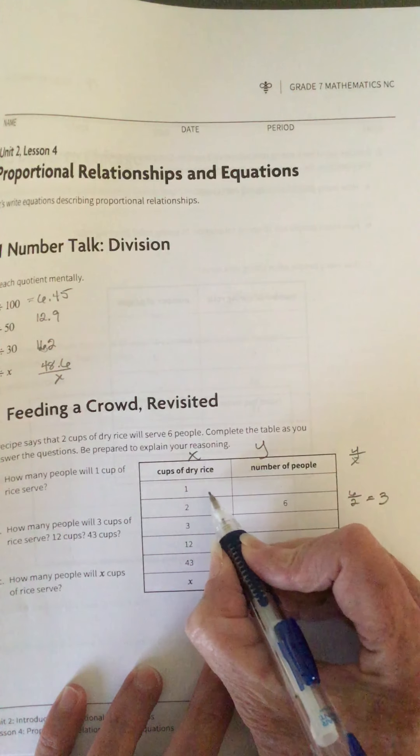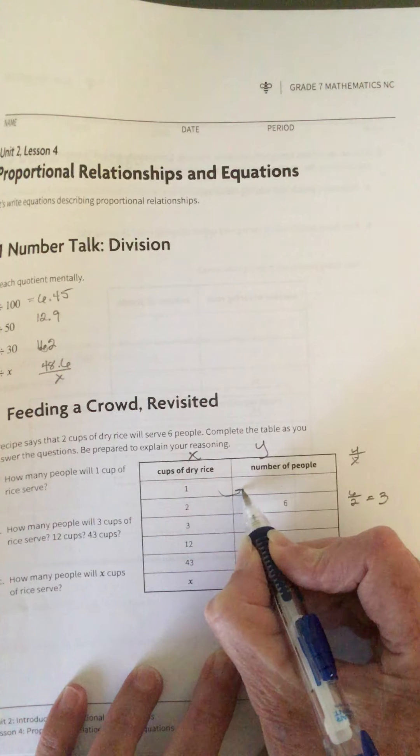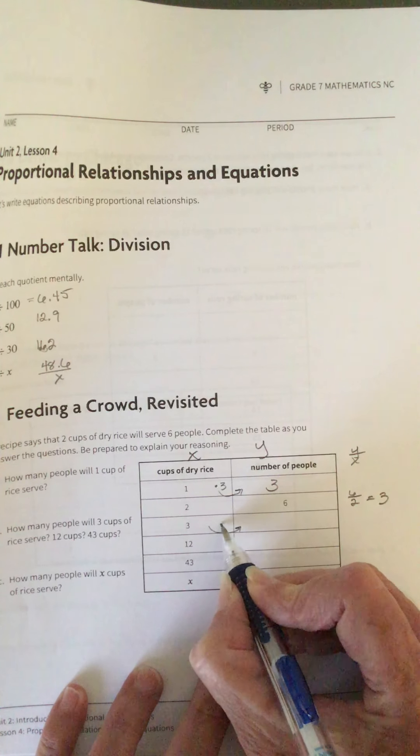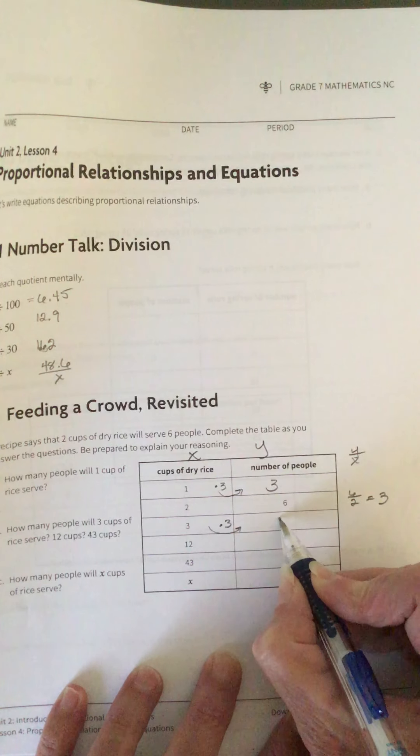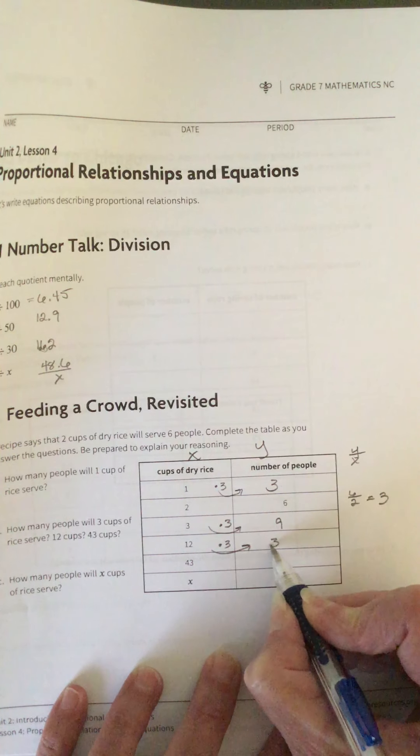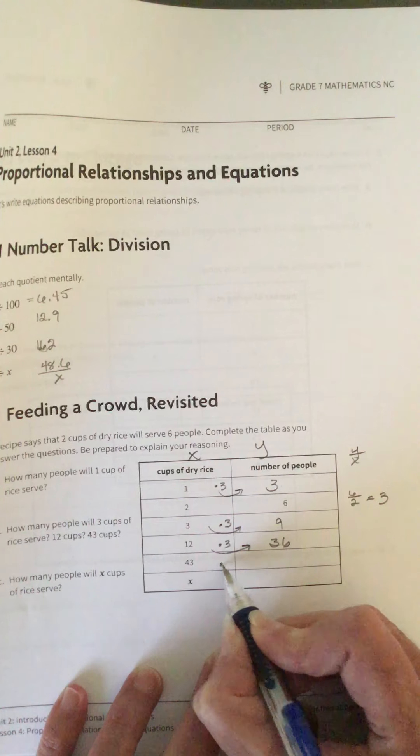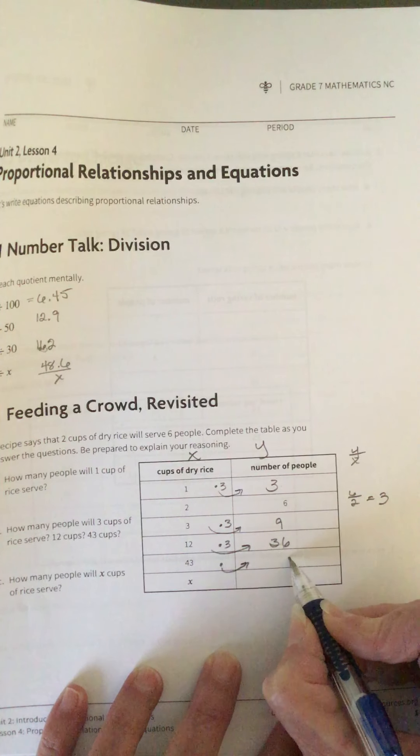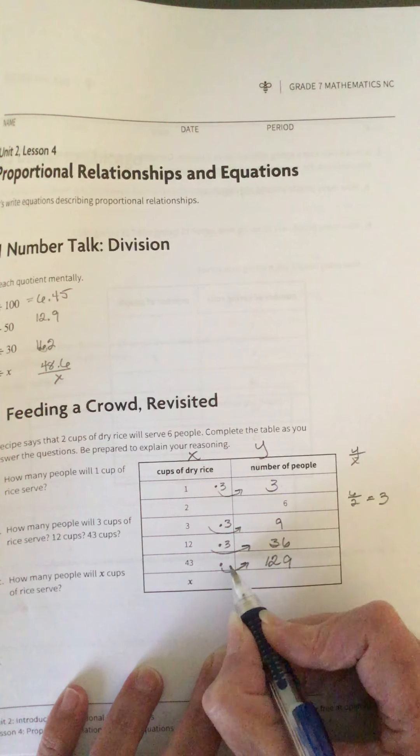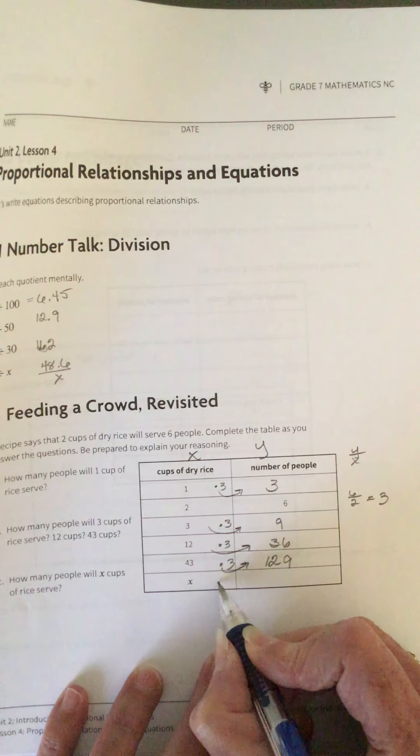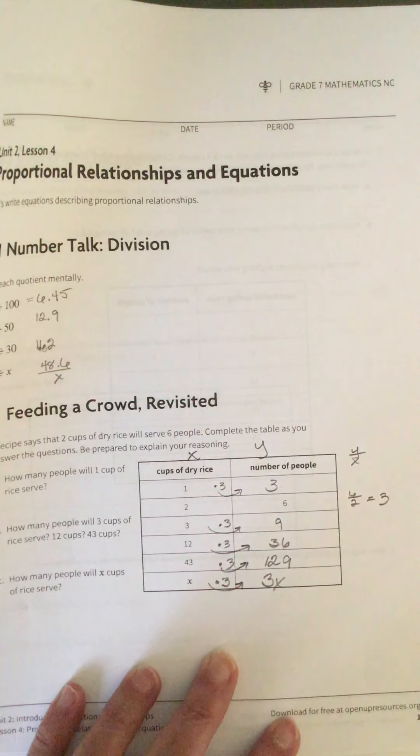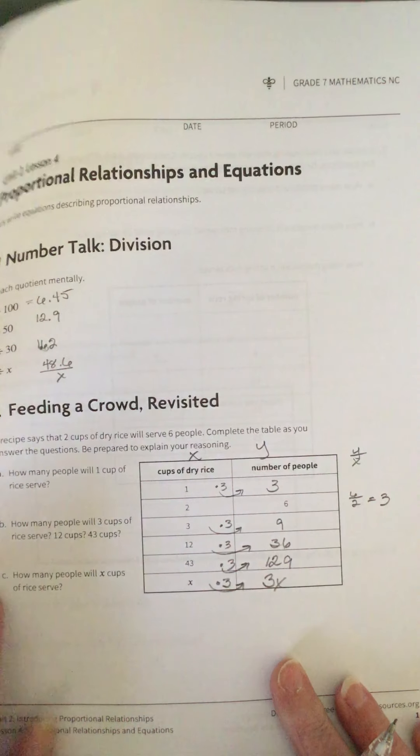But here we have 6 over 2, so that equals 3. So then remember, that's our constant of proportionality. So to go from here to here, I'm going to multiply by 3. Go from here to here, I'm going to multiply by 3. So that will give me 9. Times 3 here, that's going to give me 36.